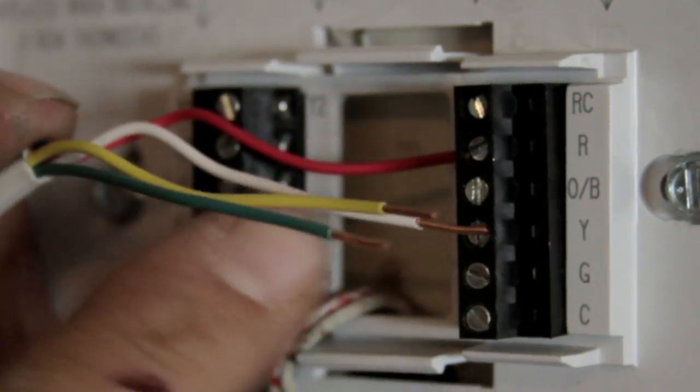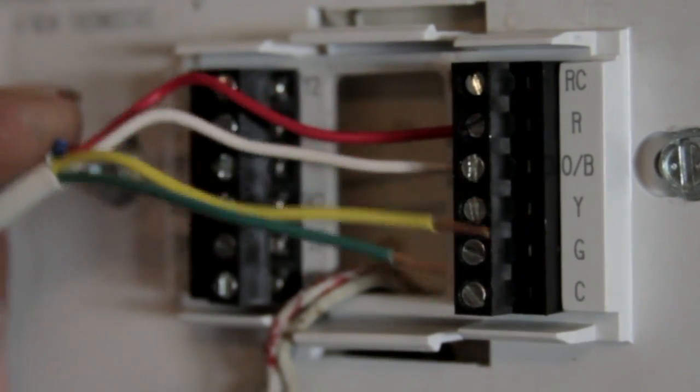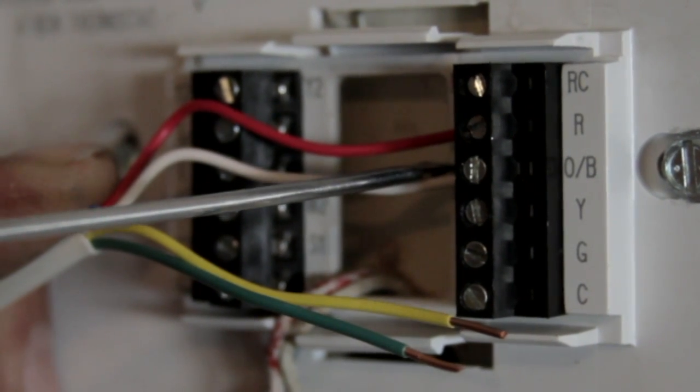Our next step on this one, this one has an O or a B on it, or on the inside of here it actually says W. So on the inside that's going to be our heating leg.